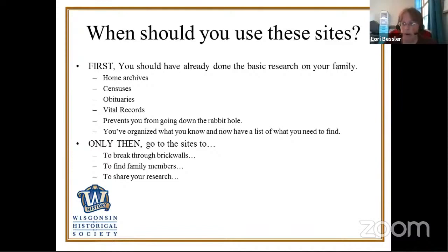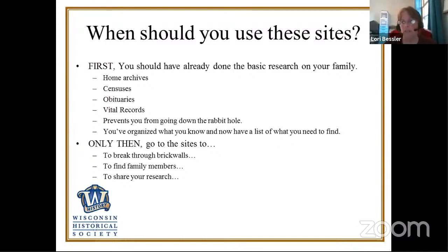Have you found all the family members in censuses? Obituaries on each person in your family tree? Their vital records — birth, marriage, and death events on civil or church records? Understanding these types of records will help prevent you from running down rabbit holes. We've all gone down the wrong rabbit hole and gathered wrong information — going down the wrong line or up the wrong tree. Organizing before you start looking is really important. You organize what you know and make a list of what you need to find.